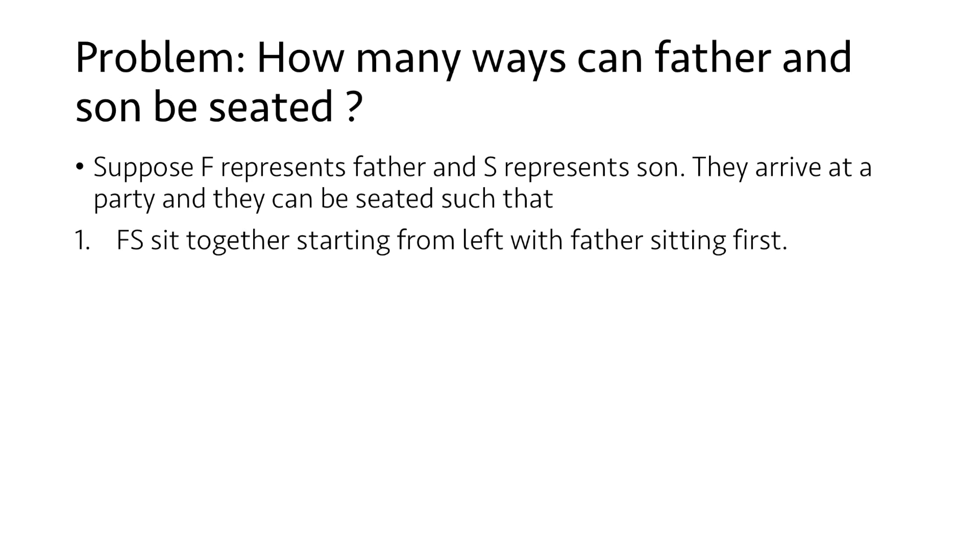Only another pair of father and son can be seated in between the existing seated pair. Let's say the father and son represented by black arrive first and they are seated. Next the pair represented by red arrives and they are seated in between the already seated pair of father and son represented by black.